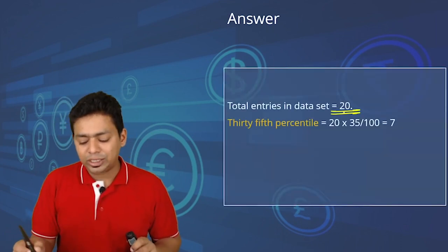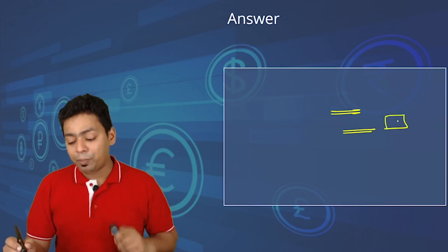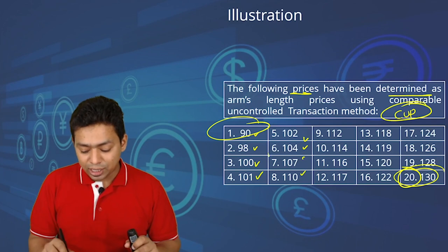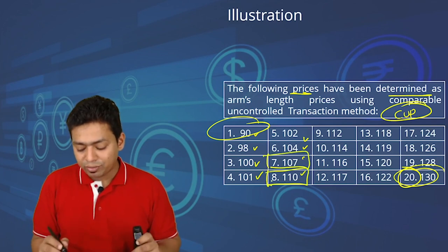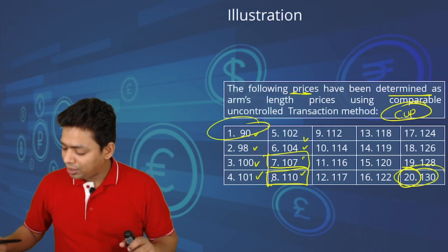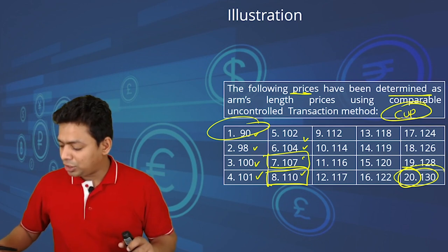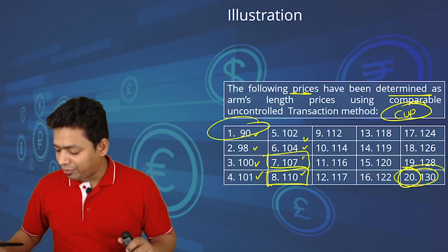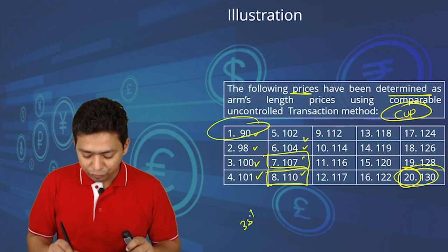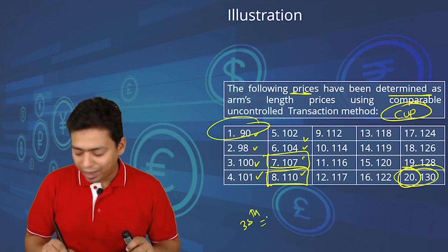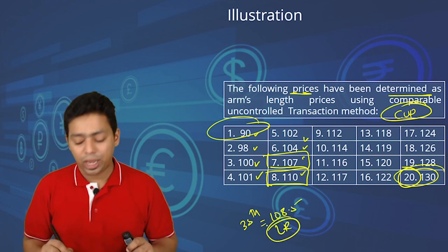For the 35th percentile: 20 × 35/100 = 7, which is a whole number. Therefore, we take the average of the 7th and 8th values: 107 plus 110 equals 217, divided by 2 equals 108.5. So the low range is 108.5.